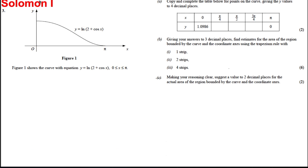The nice thing about this question is it actually drew the table out for us and is asking us to do the trapezium rule using that table. Part A: all we've got to do is copy and complete this table. When we put 0 into this function, we're working out ln(2 + cos 0), which turns out to be 1.0986.